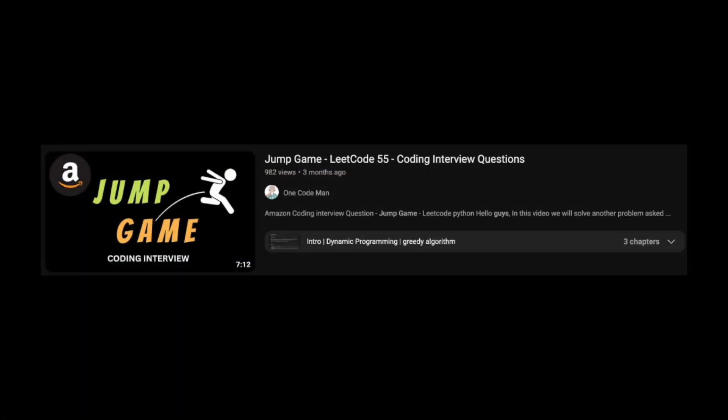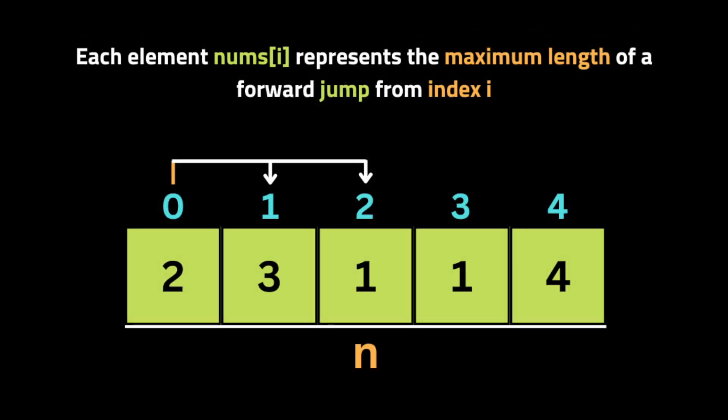Before I explain how we will solve the problem, please watch my previous video in which I solved the first version of the Jump Game problem. The problem is that we are given an array of integers of length n, and each element in the array represents the maximum number of steps we can jump. For example, if we are at the first element, we can jump from index 0 to index 2.